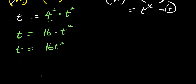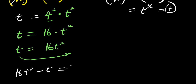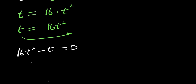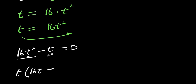We move the t over and set the equation to zero: 16t² minus t equals zero. There is a t in each term, so we factor it out: t times (16t minus 1) equals zero.